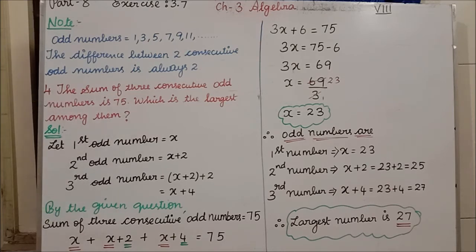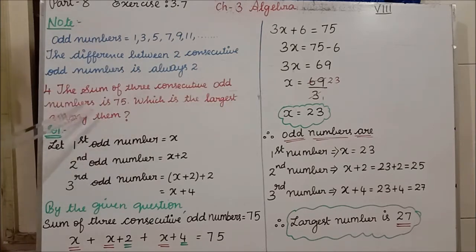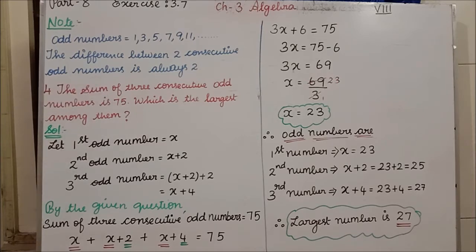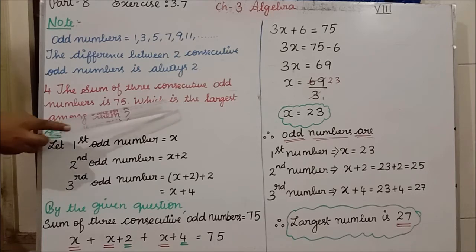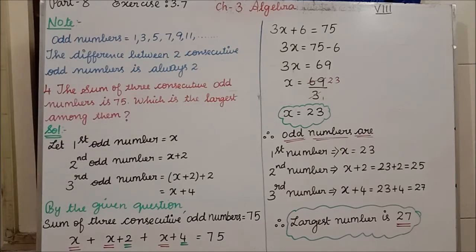Question 4 is in statement form. After reading it, we frame the equation. The sum of 3 consecutive odd numbers is 75. The word 'sum' means addition — we have to add 3 consecutive odd numbers. We don't know what those 3 consecutive odd numbers are, so we have to assume them. The question also asks: which is the largest among them?